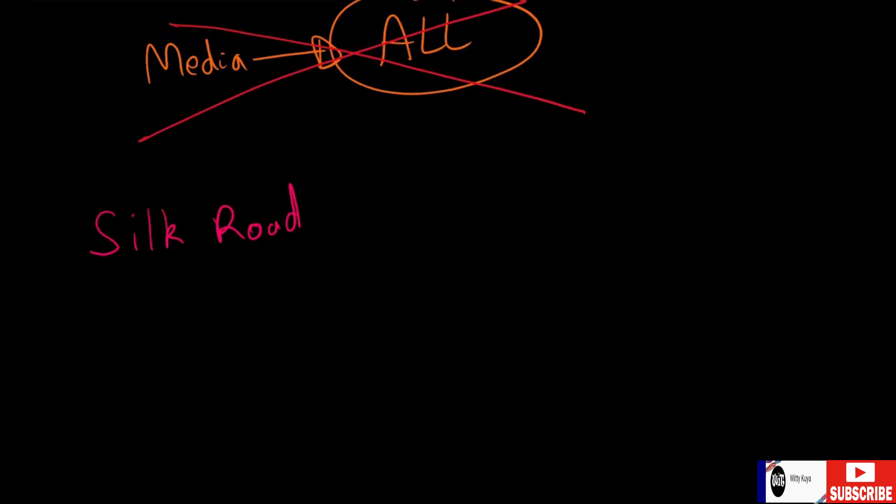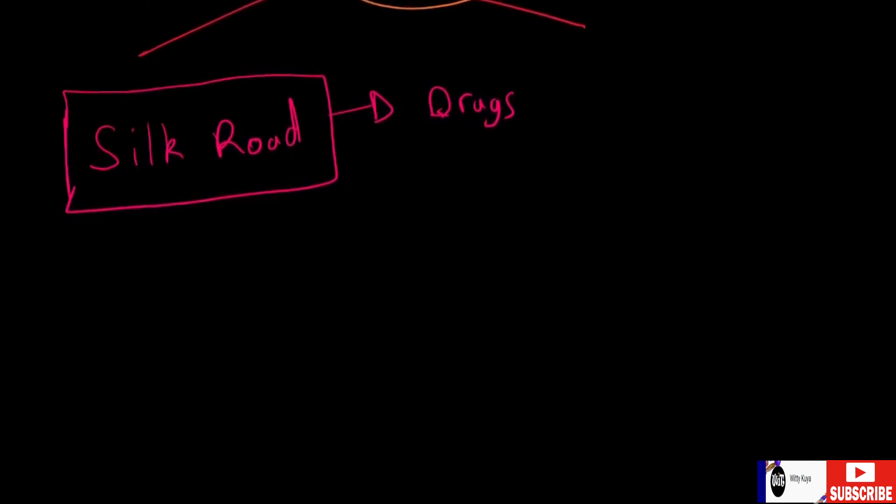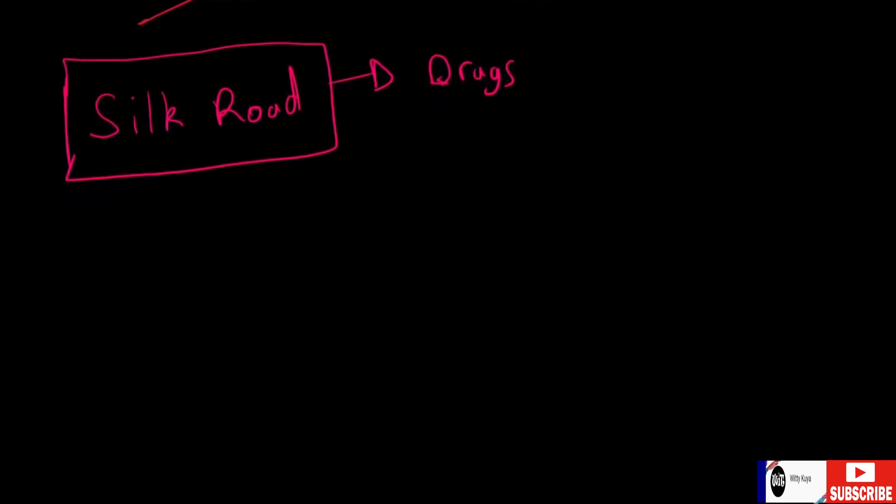That basically facilitated the sale of drugs using Bitcoin as a means for purchasing them and various other stuff as well. So other stuff that is being used for online outside of Silk Road is weapons.